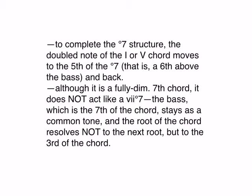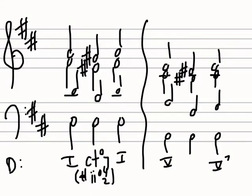And the root of the chord resolves not to the next root the way a seven seven of something would do, but the root resolves to the third of the chord. So going back here, if this is an E sharp chord—E sharp, G sharp, B, and D—the E sharp goes to F sharp, the third of the one chord. Here B sharp, D sharp, F sharp, A—the B sharp goes to C sharp, the third of the five chord.